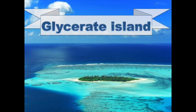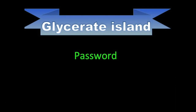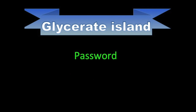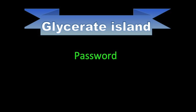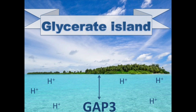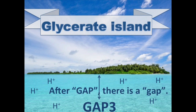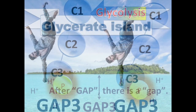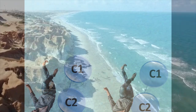Next, let's go to the island over there. We need a password to enter the island. It's 1-3-BPG (1-sleeve-3-2). Repeat after me: 1-sleeve-3-2. Glyceride. After a gap, there's another gap. Let's swim to the glyceride island!